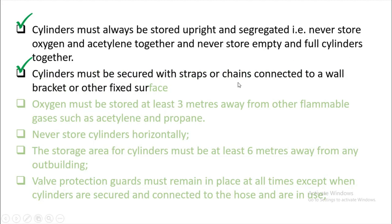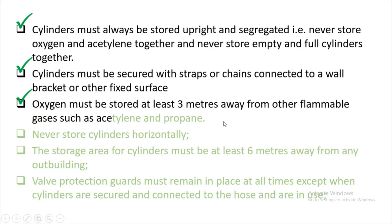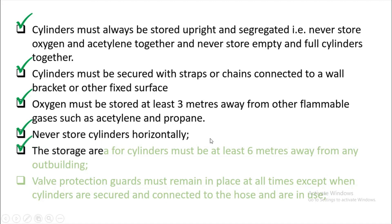Cylinders must be secured with straps or chains connected to a wall bracket or other fixed structure to prevent them from falling to the floor. Oxygen must be stored at least three meters away from other flammable gases such as acetylene and propane.